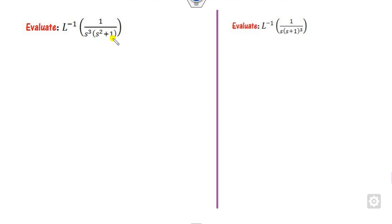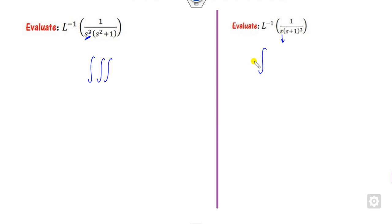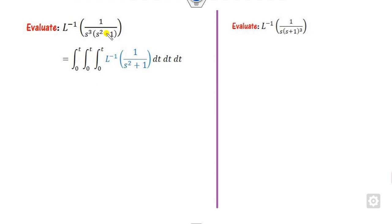For example, here we have S cubed. Whenever there is a division by S and the power is 3, then you have to integrate 3 times. If the power is 1, you integrate once. Since this is S cubed, you have to integrate 3 times from 0 to t, and the remaining part is found next.